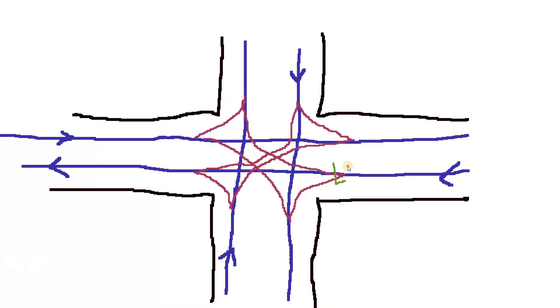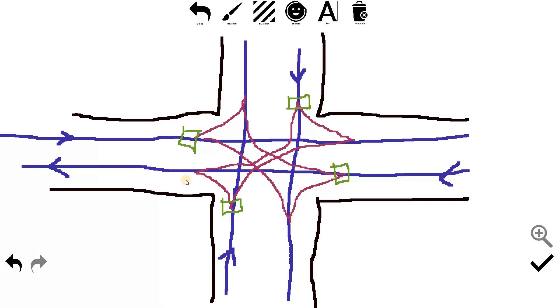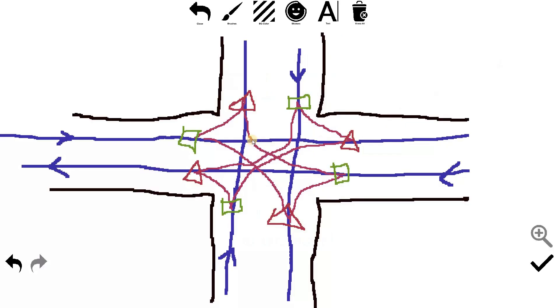These are my diverging conflict points and this is my merging conflict points. This one, this one, and this one, and this one. Now I will change the color and draw crossing conflict points.